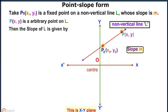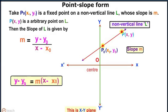Then the slope of line L is given by m equals y minus y0 divided by x minus x0. Thus the equation of line reduces to y minus y0 equals m times x minus x0. This is called point-slope form of a line.